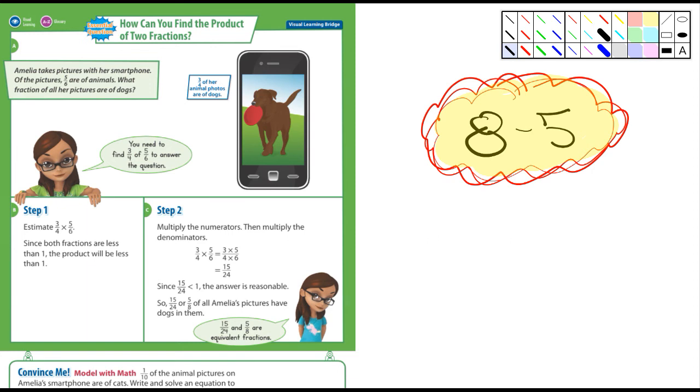And so it's going to be simply three quarters times five sixths. And you guys know how to do that. And they even show you right here, it's kind of convenient. You just multiply straight across. Three times five is 15. And then four times six is 24.